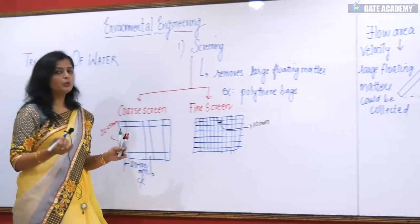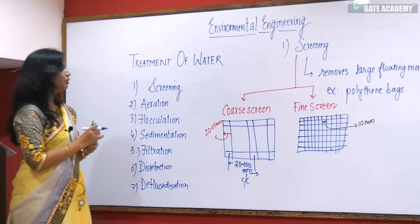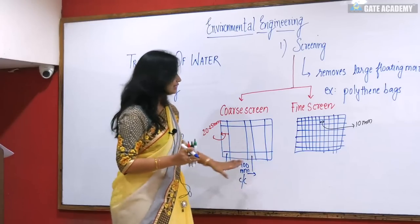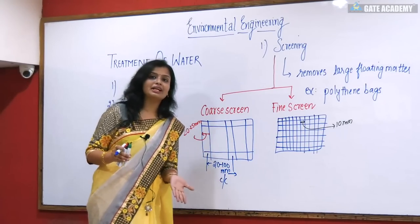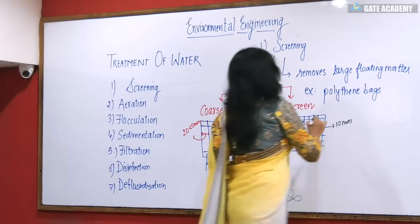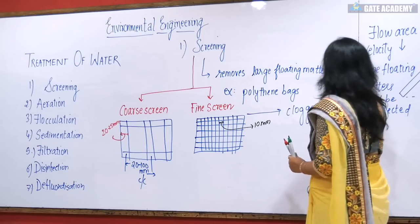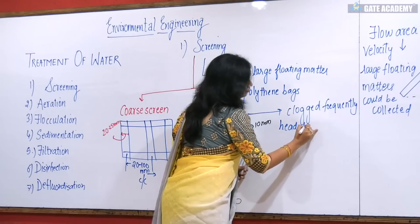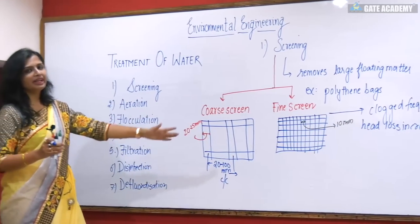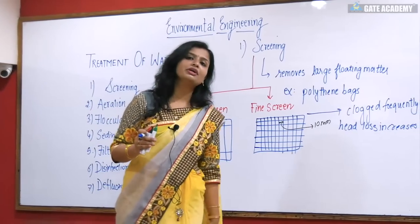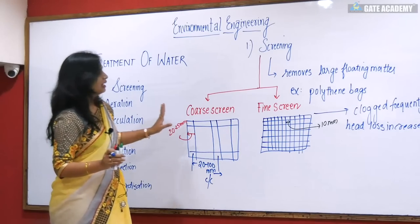The question is: which is more efficient — coarse screen or fine screen? For treatment purposes, we prefer the coarse screen as compared to the fine screen. The reason is that the fine screen has a small mesh opening size because of which it gets clogged very frequently, and head loss increases. The basic aim is that large suspended particles or floating matter are removed by the coarse screen.